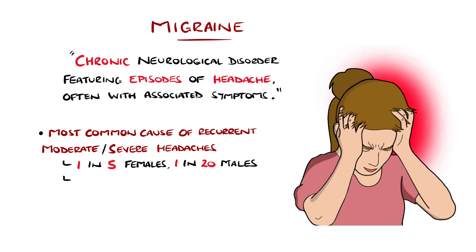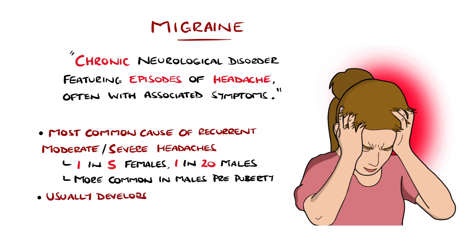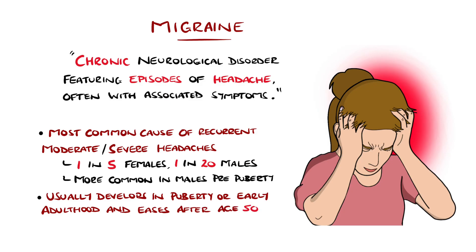Prior to puberty, however, it is more common in males than females. It usually develops in early adulthood or during puberty and fluctuates over the course of the adult years before typically improving after the age of 50. It tends to have a strong genetic component and commonly patients will have a family history of migraines.